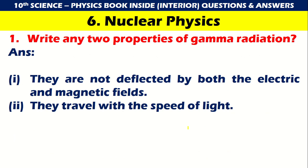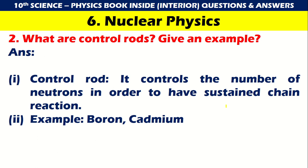Chapter 6: Nuclear Physics. Write any two properties of gamma radiation: they are not deflected by both electric and magnetic fields; they travel with the speed of light. What are control rods? Give an example. Control rods control the number of neutrons in order to maintain a sustained chain reaction. An example is boron and cadmium.